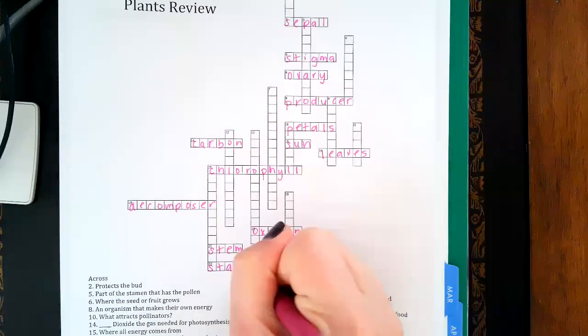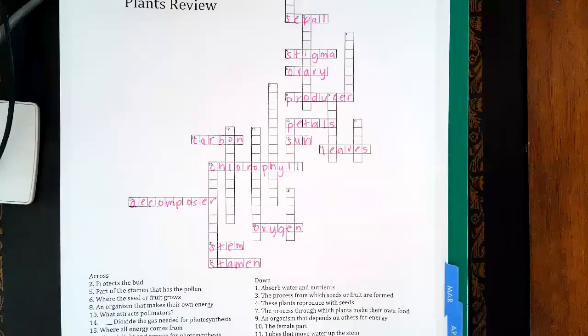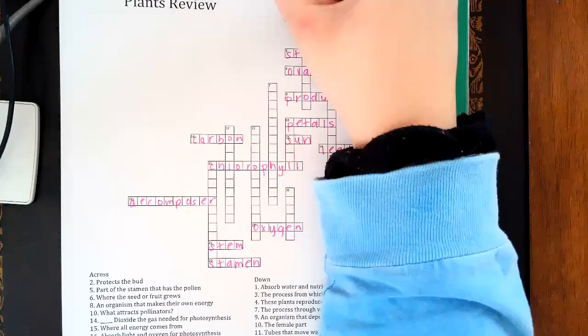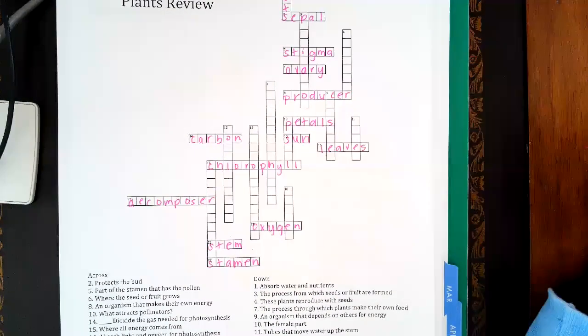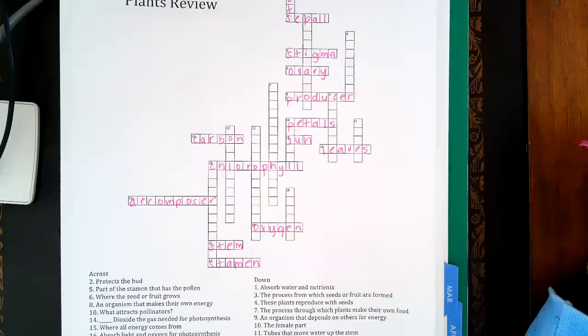Alright, that's all of our across clues. I'm going to do the down clues now. Absorbs water and nutrients - that would be the roots. Where fruit are formed - that would be pollination.